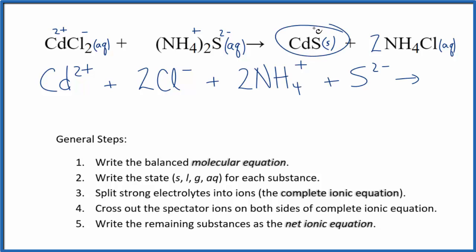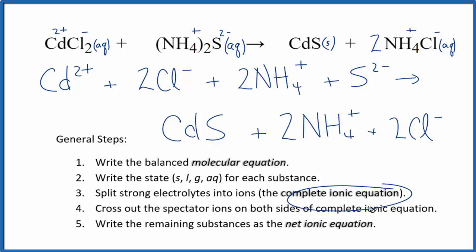For the products, we don't split solids apart in net ionic equations, so we're going to keep CdS together. And then we have our ammonium ion and our chloride ion, two ammonium ions, and then we'll have also two of these chloride ions here. So this is the complete ionic equation.